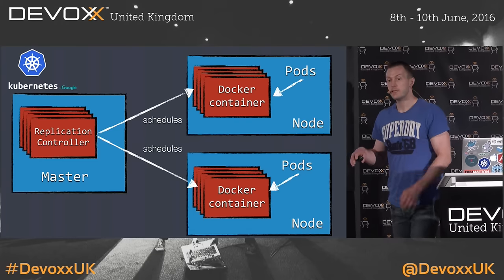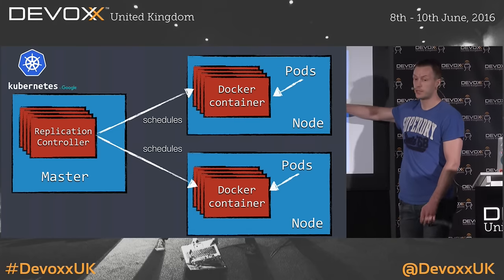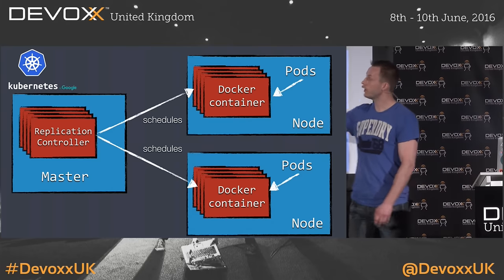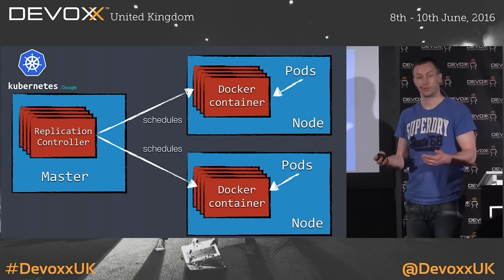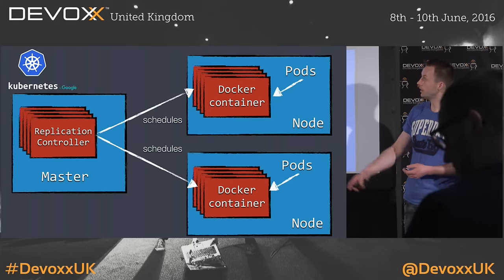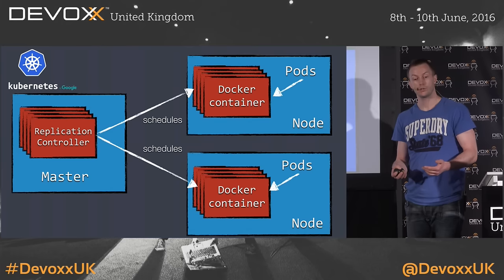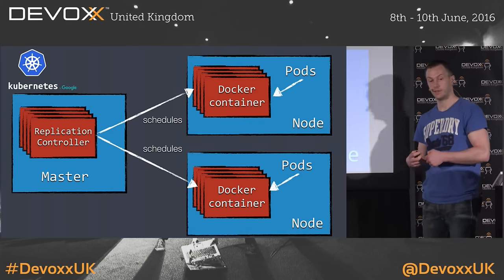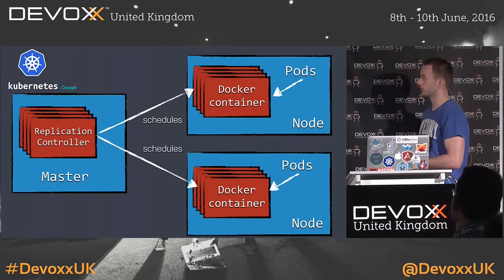When working with Kubernetes, we are not starting containers on a specific node, but instead we just configure the state that we want — we want to have five replicas of a sort of container. That's described in a replication controller, and the replication controller makes sure that we will get to that state and keep in that state. The replication controller is a very important concept.